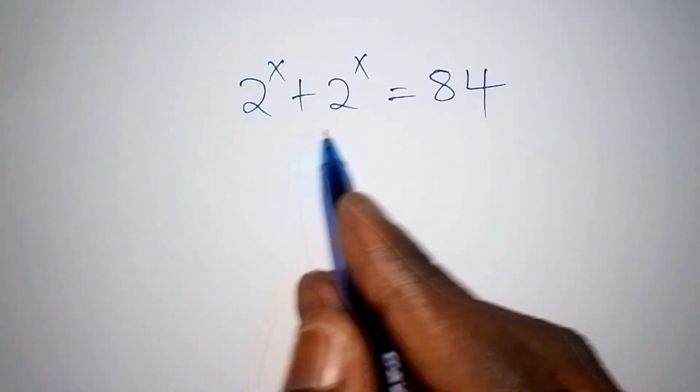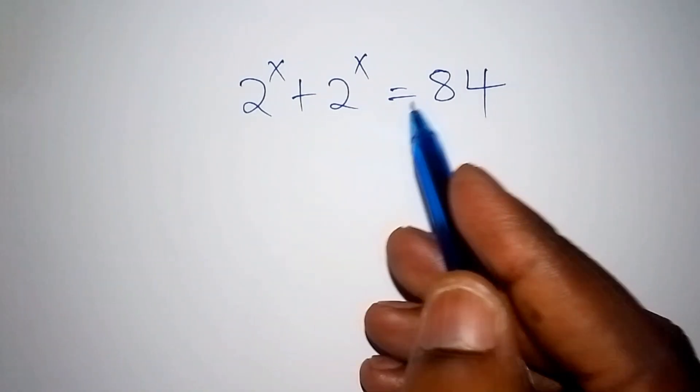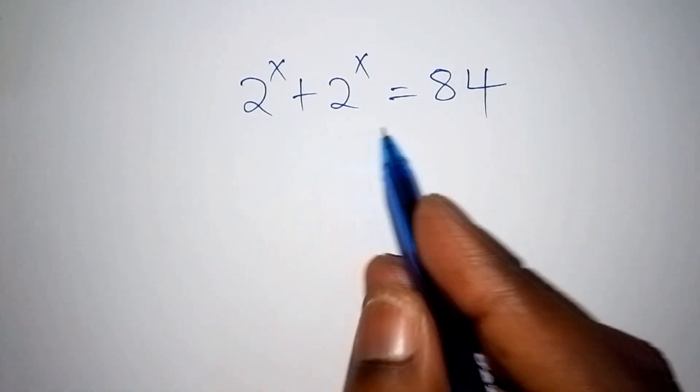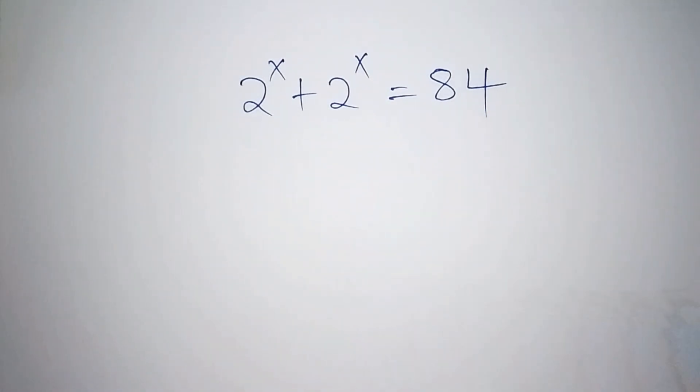We have 2 to the power of x plus 2 to the power of x equals 84. We are asked to solve the value of x.